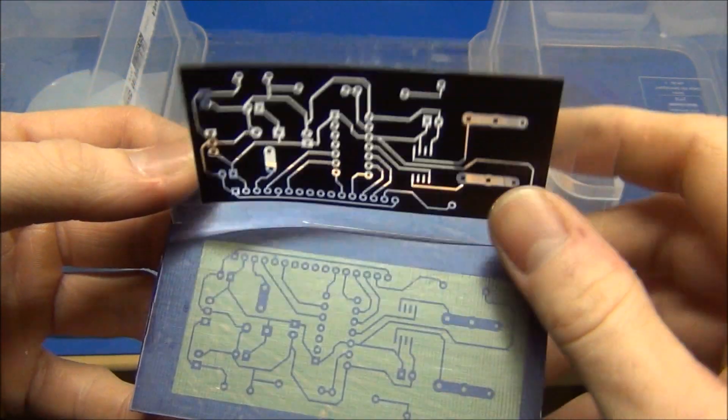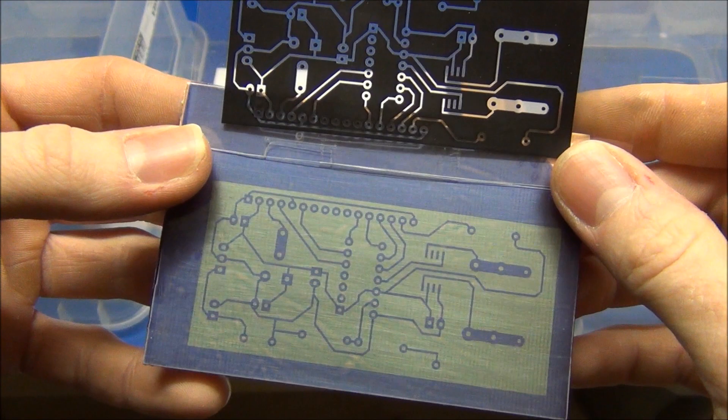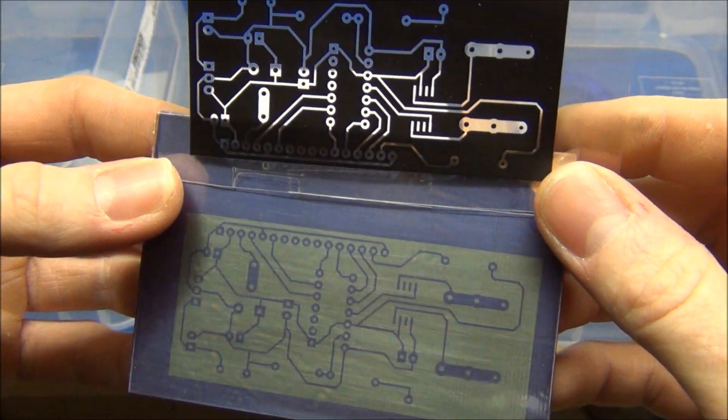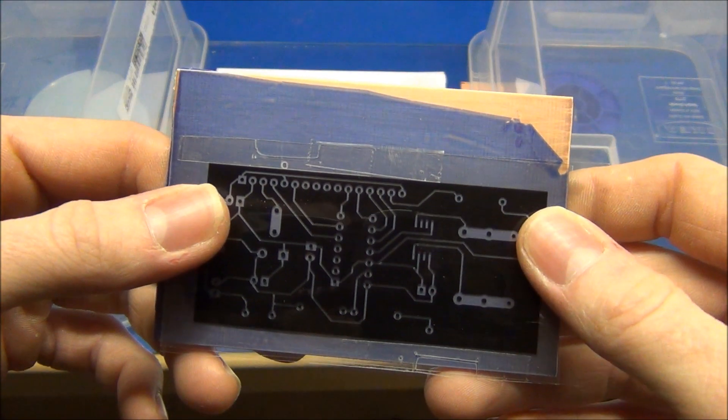And now when you remove your design, you should be able to see your circuit. But still try to prevent any light from hitting it.